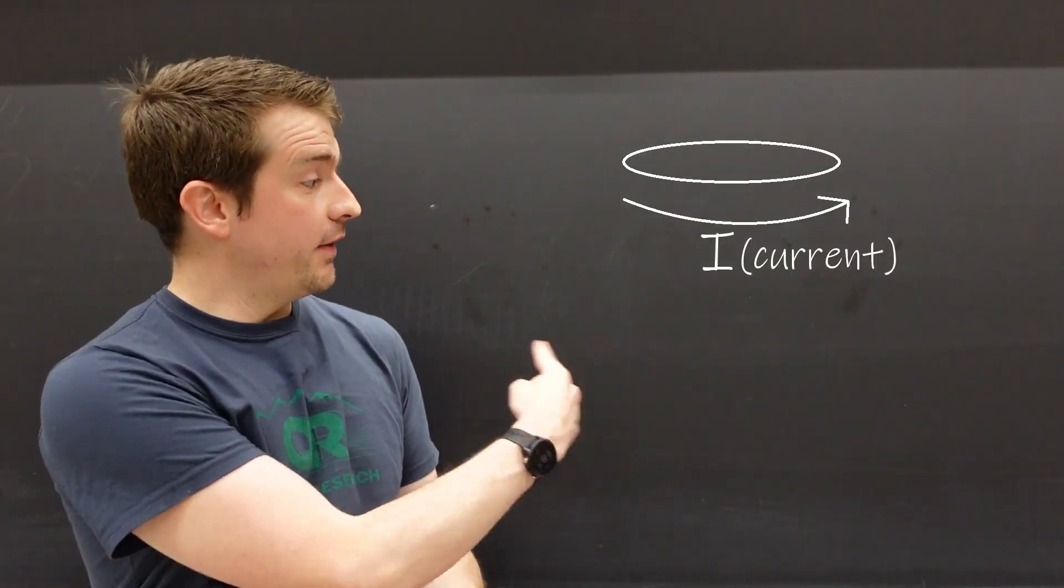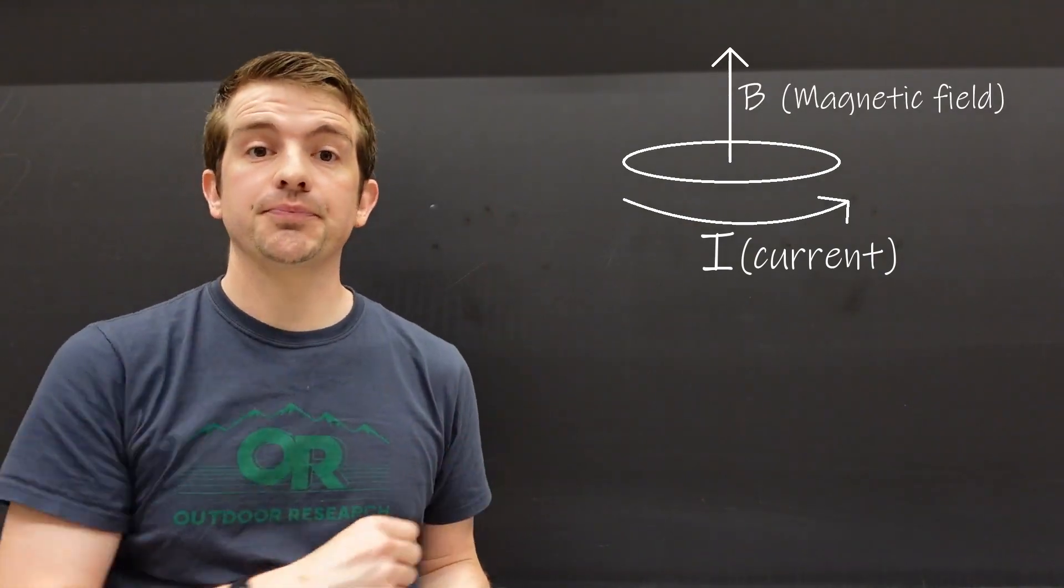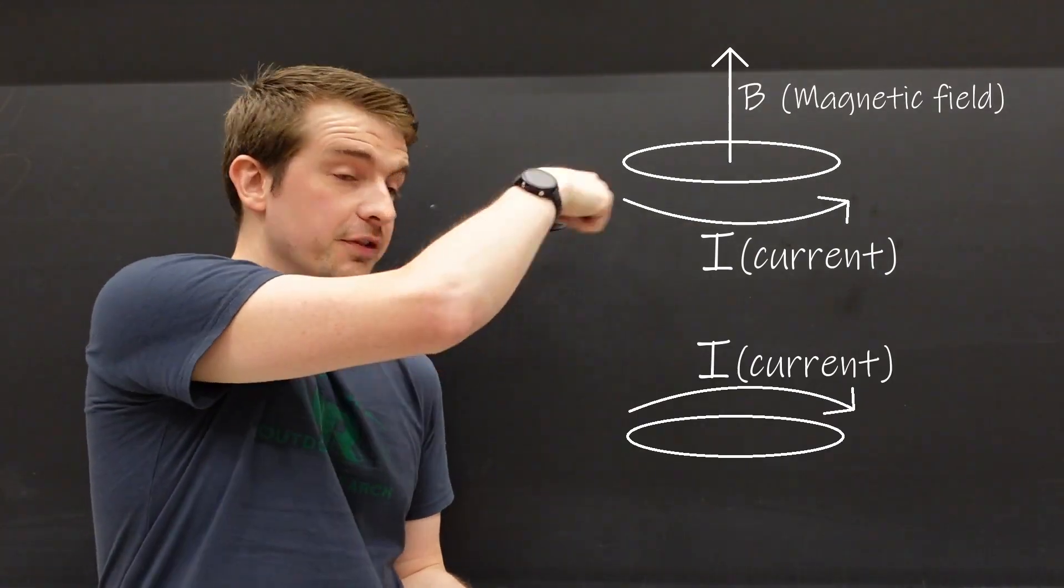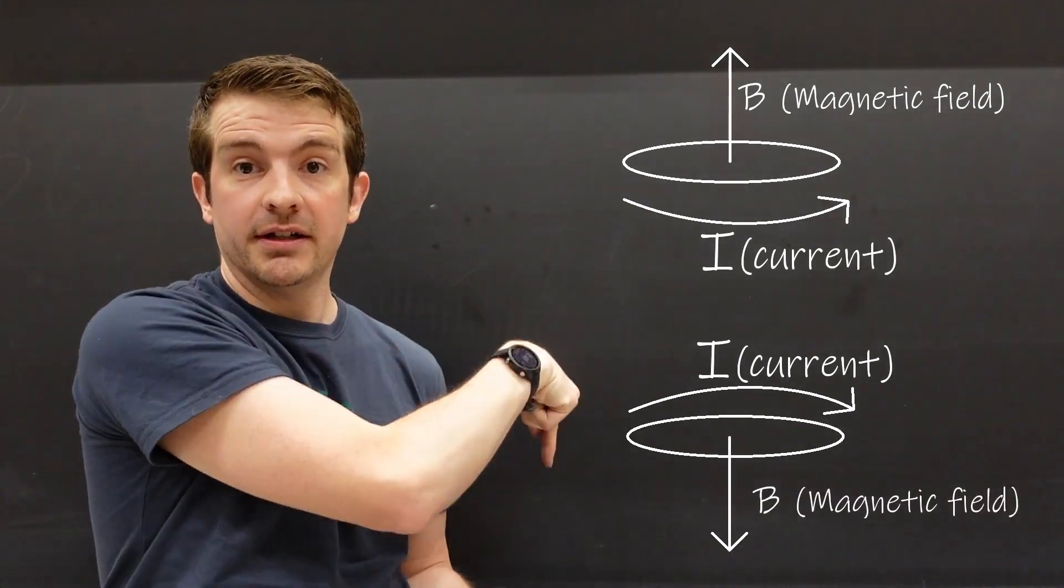You can create a magnetic field two ways: one is with a permanent magnet like a bar magnet, and the other is by running current through a wire. If you run current through a wire through a loop in this direction like this, that's going to create a magnetic field that's pointing upwards. If you run the current the other direction, that'll make a magnetic field that's pointing downwards.